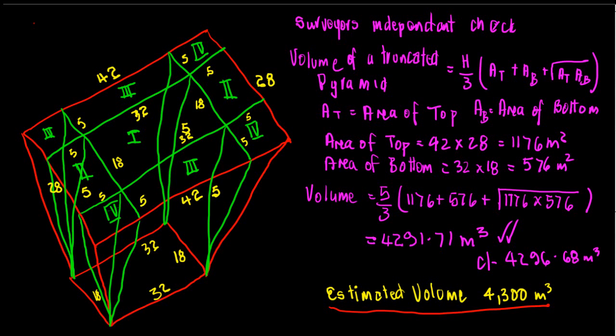So it just means that it's a pyramid with the top cut off. In this case, it's an inverted pyramid because it's a pond. And we have a formula for that, which is the height divided by 3 times the area of the top plus the area of the bottom plus the square root of the area of the top times the area of the bottom.